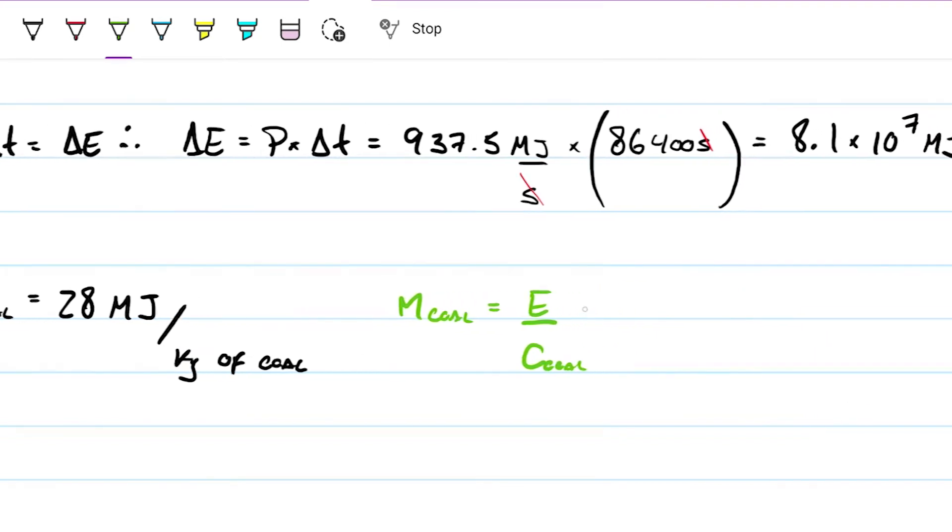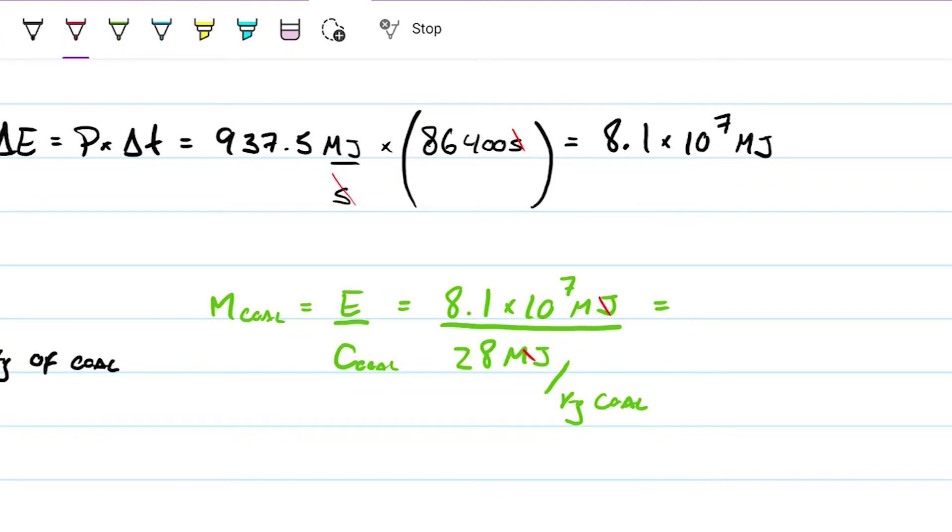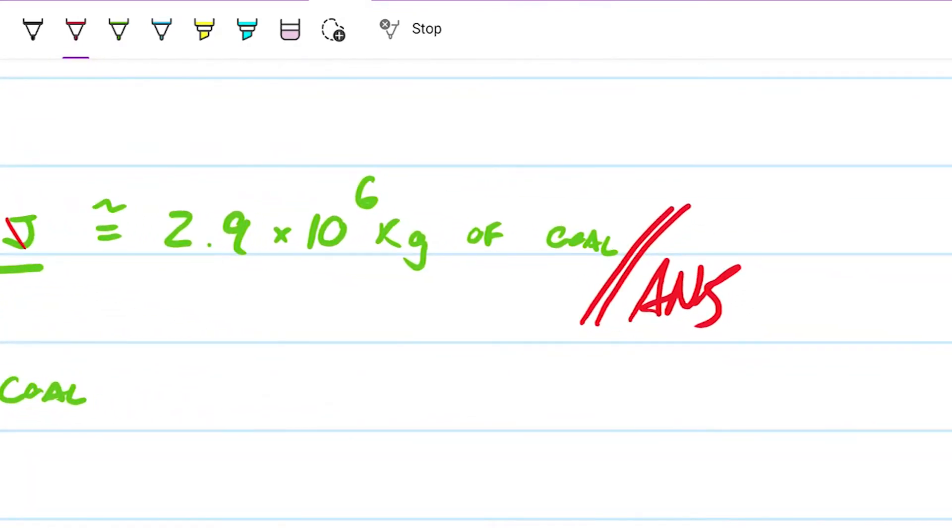So I need about 8.1 times 10 to the 7th megajoules, and I'm feeding that with something that has 28 megajoules for every kilogram of matter that I put in there. So like I said, these guys are going to go away, and I'm going to be left with the value of 2.893. Let's go ahead and do that 2.9, approximately 2.9 times 10 to the 6th kilograms of coal. So this is the amount of coal we would need to be able to power this guy for 24 hours, and that's the answer of part A.